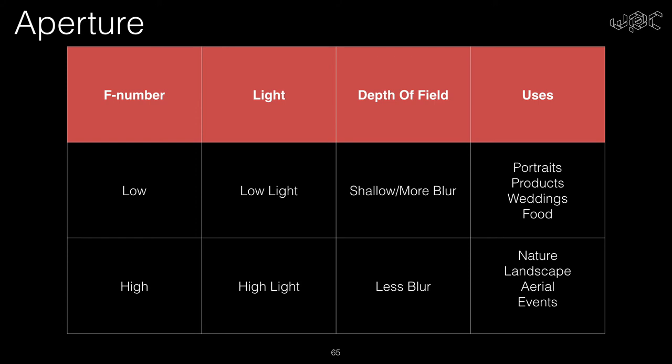If you are wondering where to use high f-numbers and where to use low f-numbers, the answer is simple. Smaller aperture values like f1.8 or f2.8 are great in low light and produce great blurry backgrounds — hence they are good for portraits, weddings, products, food, and similar types of photography. On the other hand, a high f-number like f22 or f36 should be used with really good light. These will produce very clear photos with everything sharp, and should be used for nature, landscape, aerial, events, and similar types of photography.